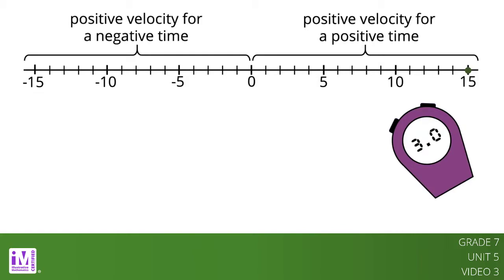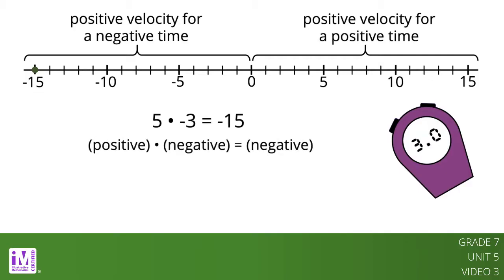For example, with a velocity of 5 meters per second, then 3 seconds before the timer started, you were at position negative 15. In other words, 5 times negative 3 equals negative 15. This shows that a positive times a negative equals a negative.